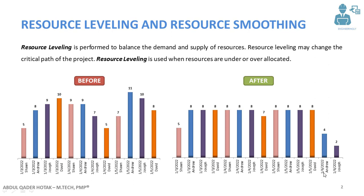The four hours of work for Andrew are moved to 6th January. The same applies for Joseph — one of the working hours from the nine-hour day is moved to the next slot, resulting in eight hours here and eight hours here. Where Joseph works ten hours, two hours are moved to 6th January.